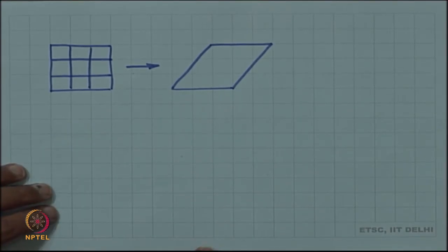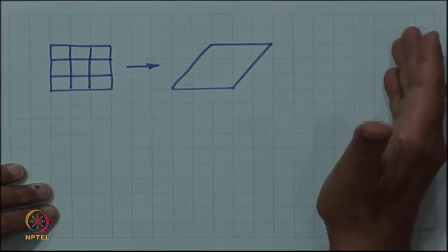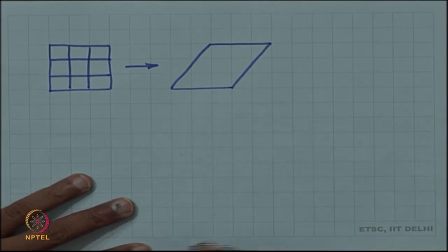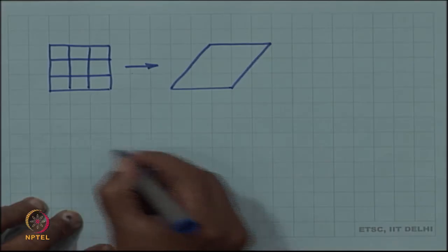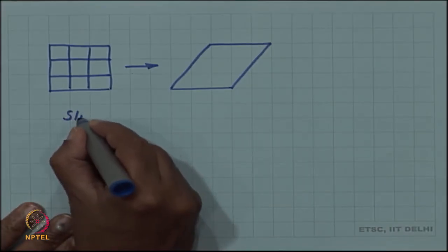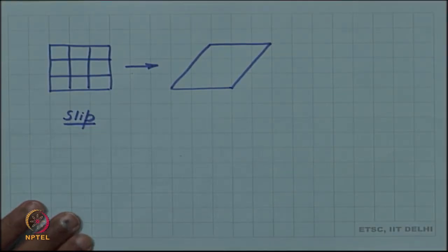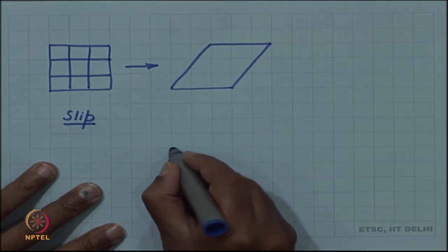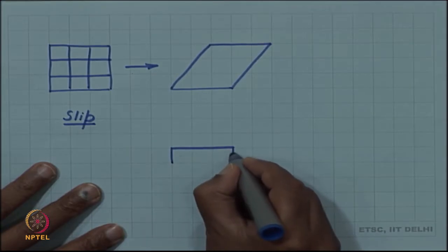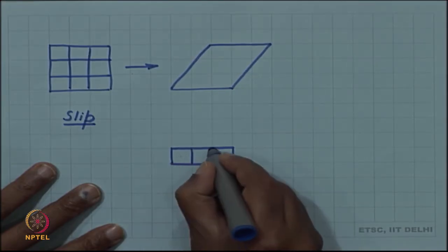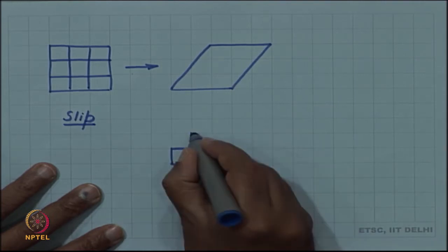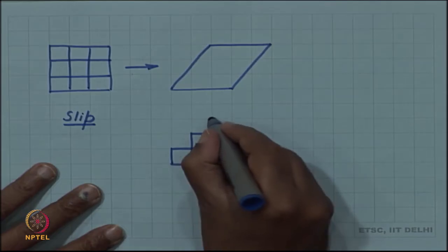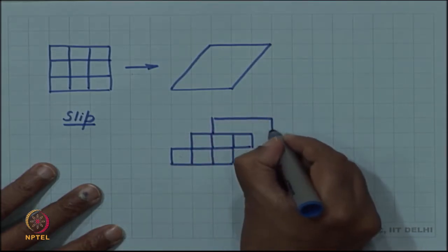Without change of crystal structure, how does external shape change when the crystal structure did not change? People thought about it and various models were proposed. One particularly successful model is the model of slip. In the slip model, the deformation happens because the unit cells do not deform, but unit cells slide over one another to give us a macroscopic shape change.